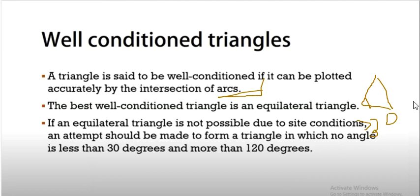If an equilateral triangle is not possible due to site conditions, an attempt should be made to form a triangle in which no angle is less than 30 degrees and more than 120 degrees. So no angle less than 30 degrees, no angle more than 120 degrees. That is nothing but a well-conditioned triangle.